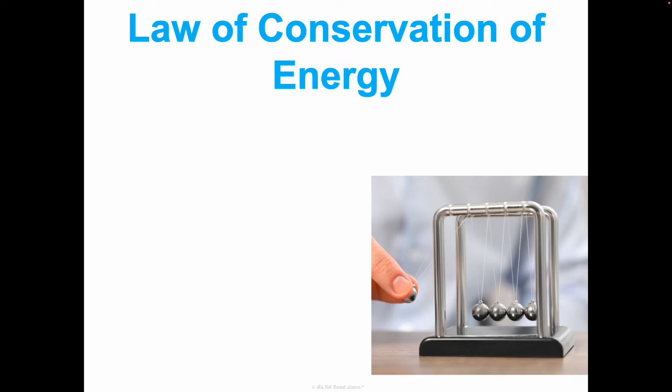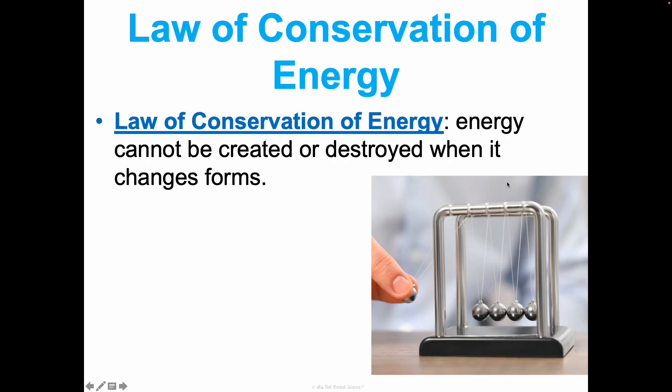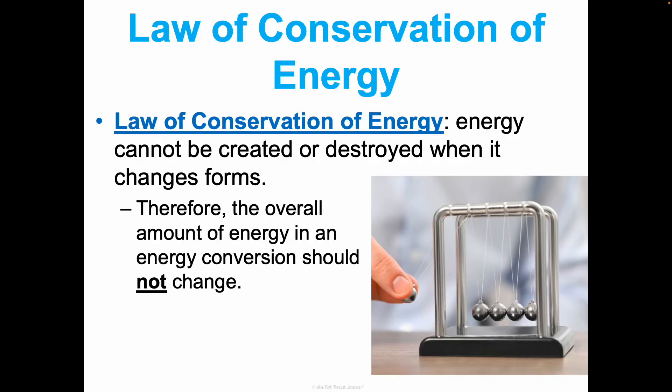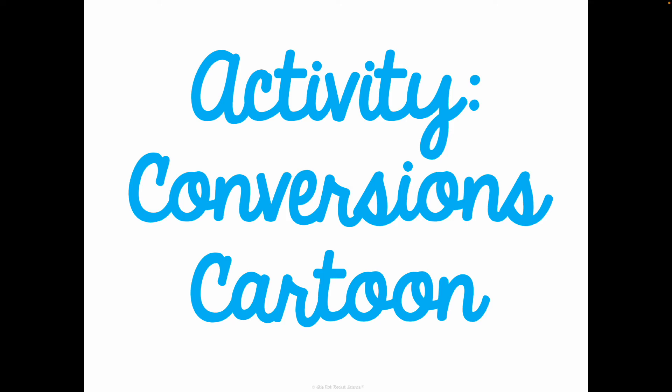We've talked about different ways that thermal energy can be transferred, that heat's transferred. But when energy is transferred or if it's even converted, because you saw in your discovery stations energy can be converted in different forms. It can go from chemical potential to light or chemical potential to another chemical potential or gravitational potential to kinetic. It can be transferred. When energy is transferred or converted into another form, it should not be lost in that process. Yes, it can be transferred and converted and transformed into other forms, but it should not be lost according to the law of conservation of energy, which says that energy cannot be created or destroyed when it changes forms. Therefore, the overall amount of energy in an energy conversion should not change. It should be the same. This is also known as the first law of thermodynamics. We're going to review this concept with a little fun activity in class.